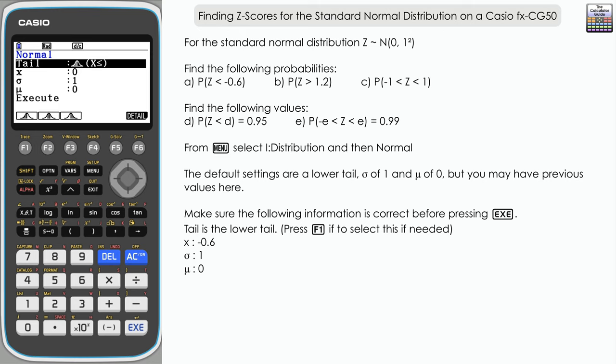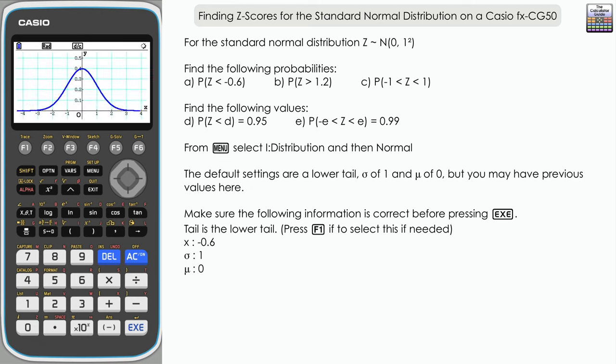The default tail is the lower tail, which we need for part A. We're looking for the probability that Z is less than -0.6, so we want the lower tail. If it's not selected for you, press F1 to select that. We're going to change X in this case to -0.6, and I've got the standard deviation of 1 and the mean of 0 as default. If they're not that for you, then just change them now.